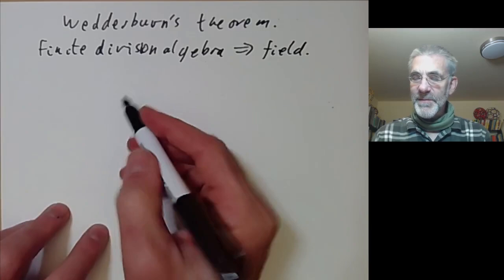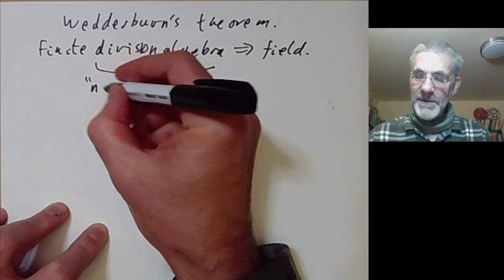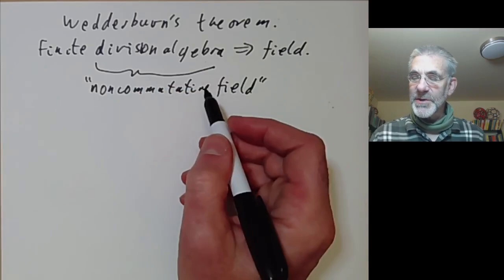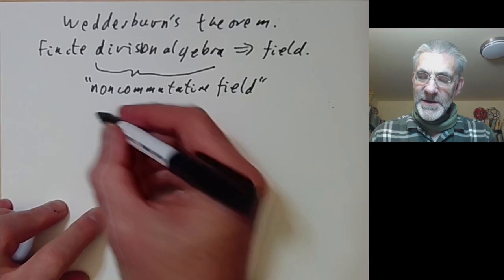So let's just recall what these mean. A division algebra is sometimes called a non-commutative field, which is rather bad terminology because all fields are commutative by definition, but what it means is you just drop the axiom about being commutative from a field.